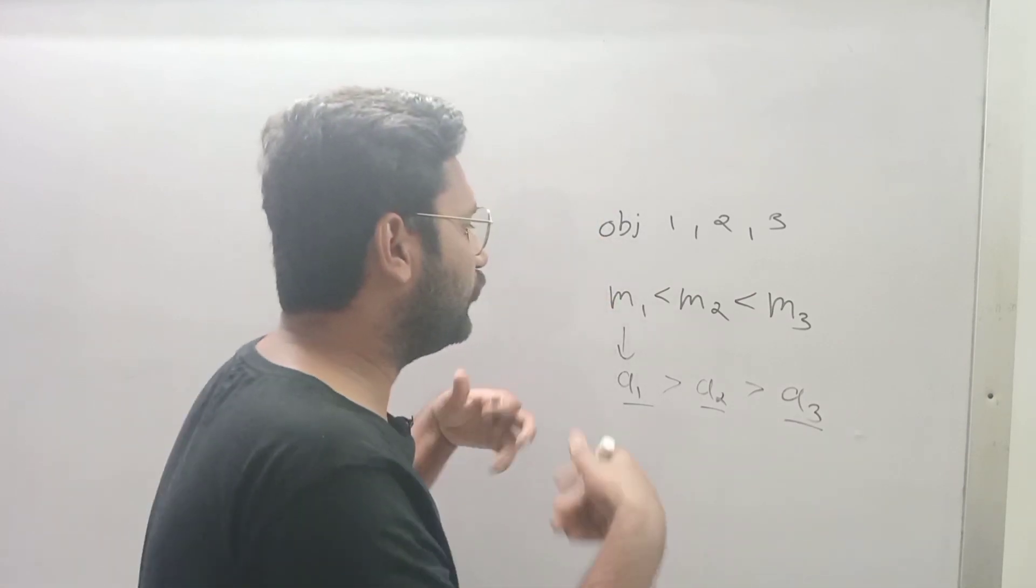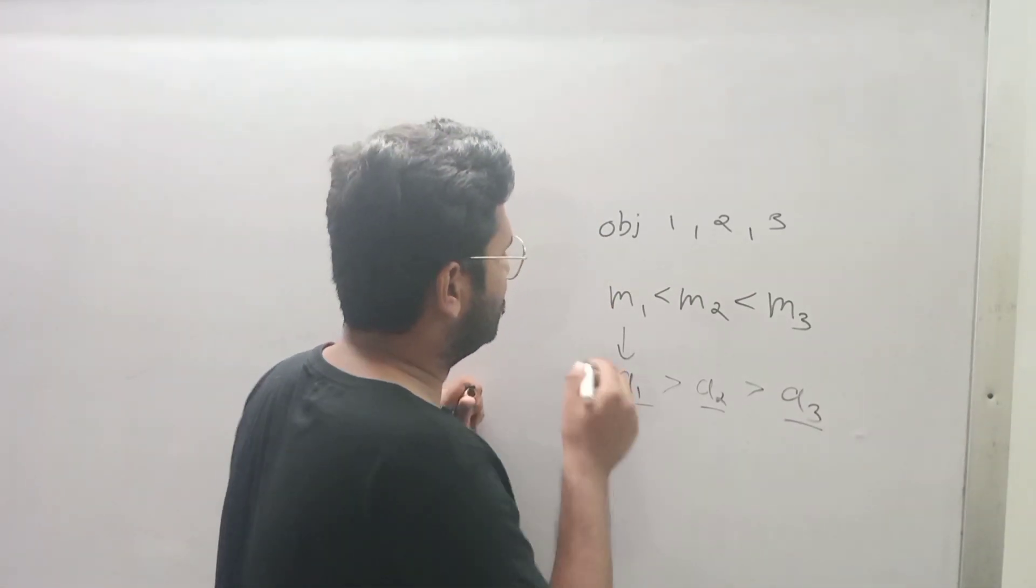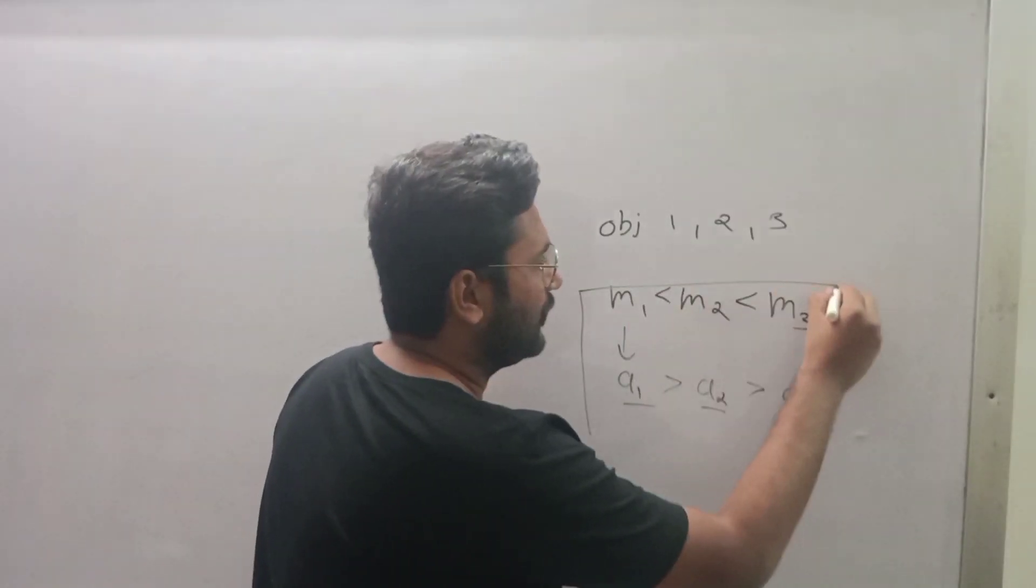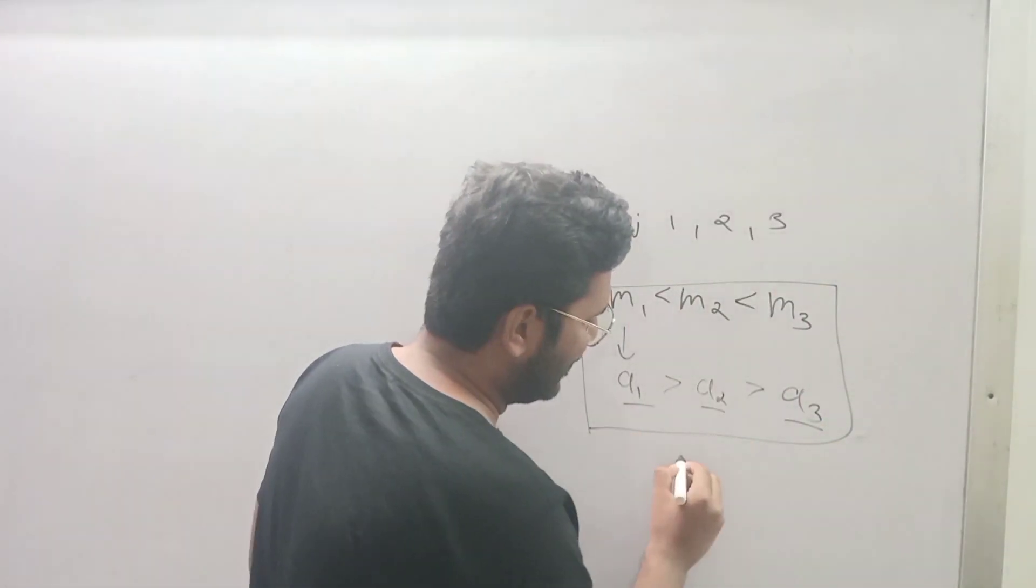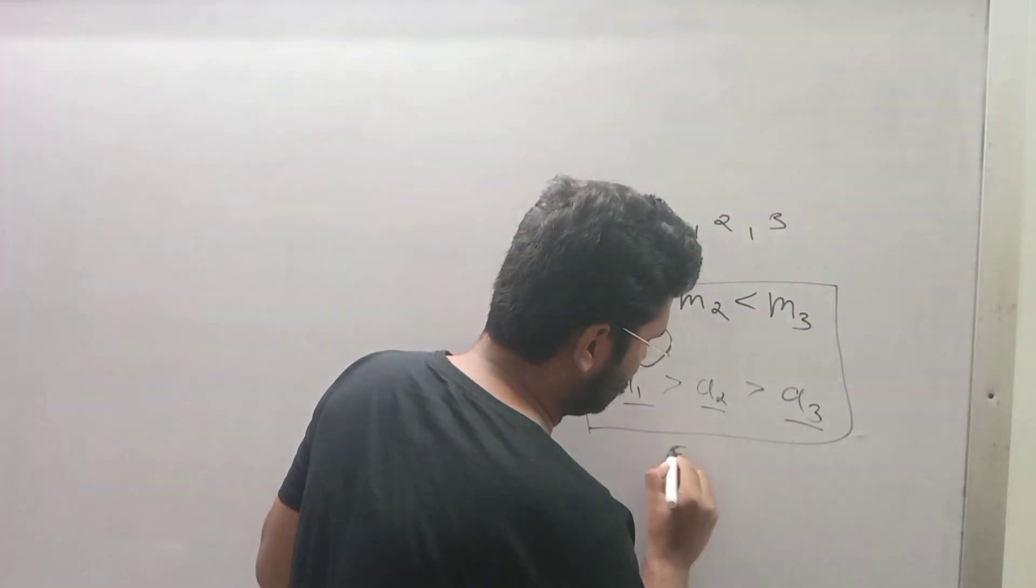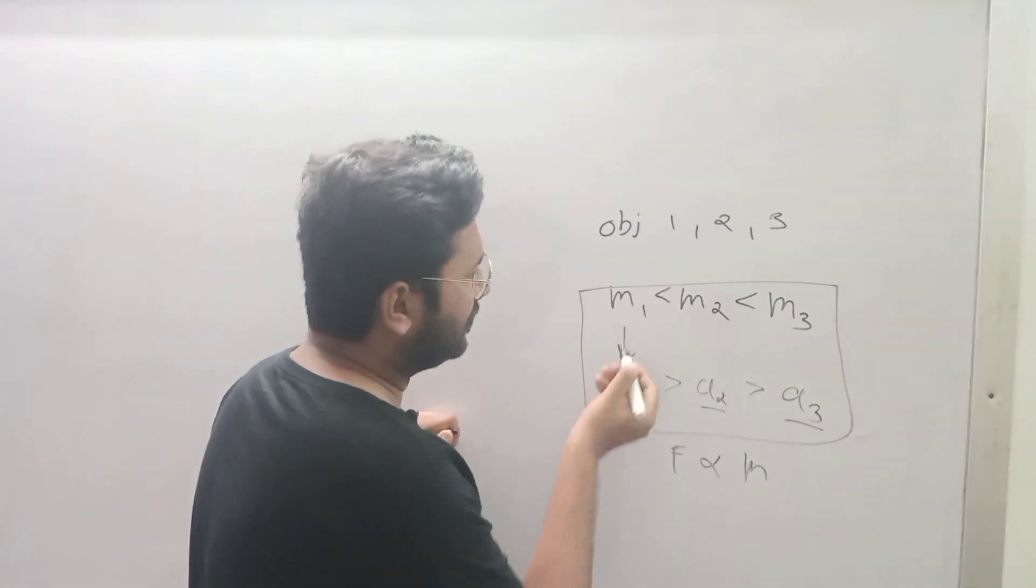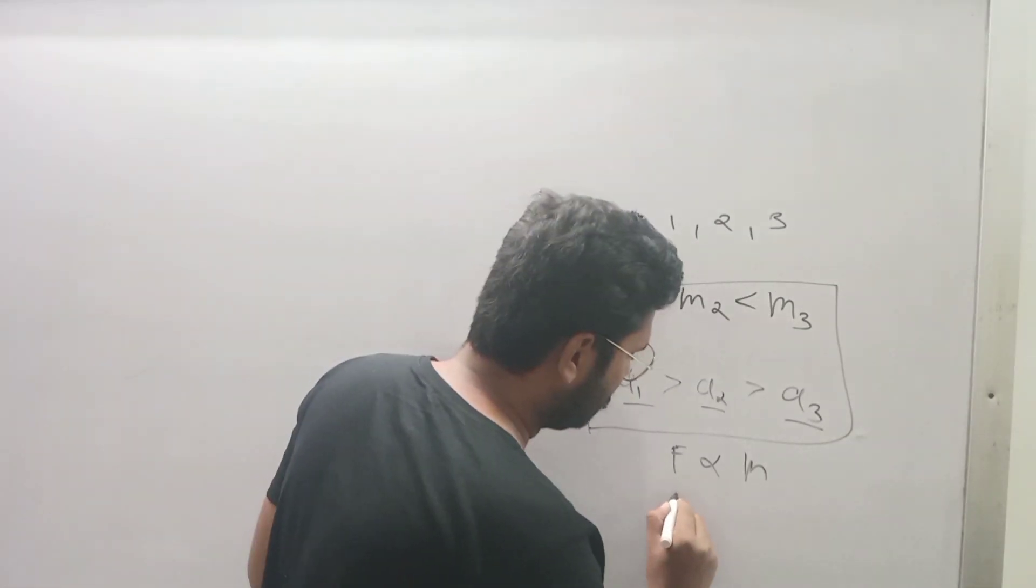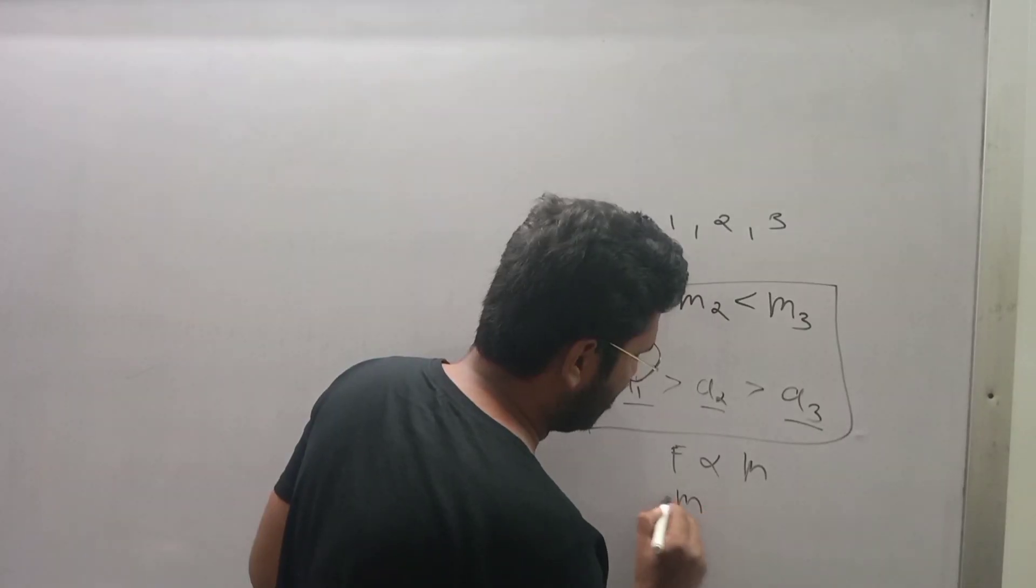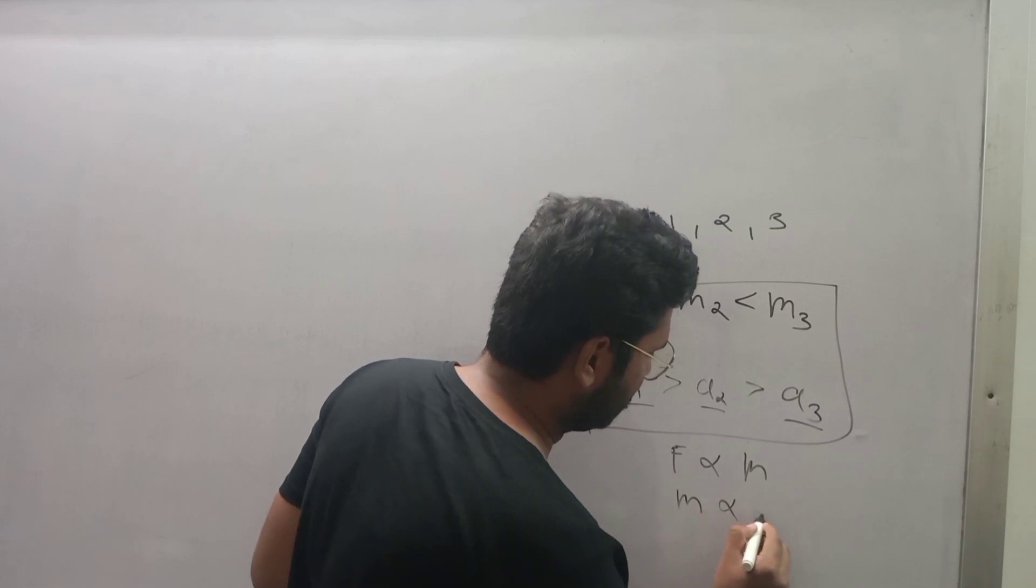So now what we can conclude from this experiment: F is proportional to m, and a is inversely proportional to m. So we can write something like this.